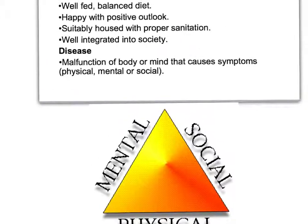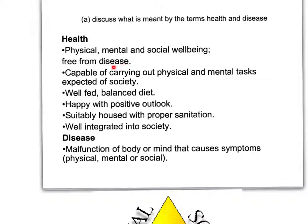Another facet of health is that you would be free from disease. A person with full health would be capable of carrying out physical and mental tasks expected of society. You'd expect them to be well-fed and have a balanced diet, to be happy and have a positive outlook — covering mental well-being — and to be suitably housed with proper sanitation and well-integrated in society, covering social well-being.